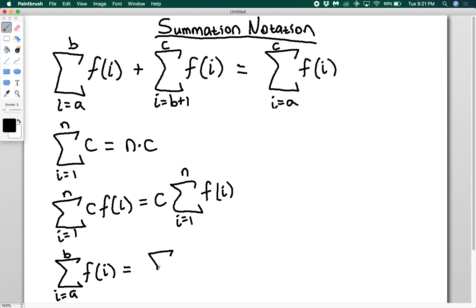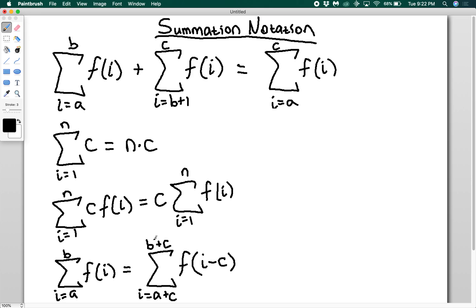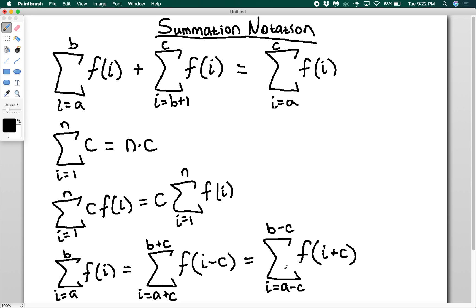If I want to re-index and set the lower bound to a plus c, I'm also going to add that much to my upper bound, so I'll have b plus c. When we add c to the bounds, we're going to subtract it from inside the function. So I replace every i in f of i with i minus c. There's no restriction on whether c is positive or negative. Conversely, if I re-index to a minus c and b minus c, then inside my function I'm going to have f of i plus c. Whatever you're doing to the bounds, you do the opposite to the function, so that you're actually summing the same terms.